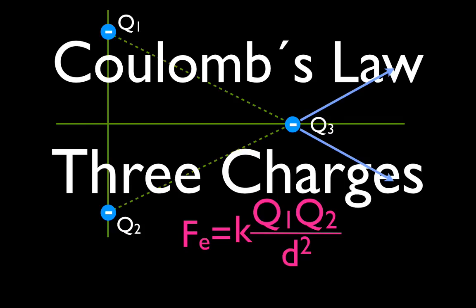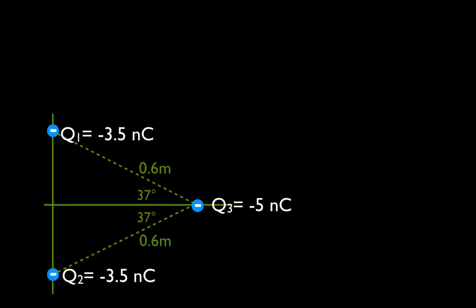In today's video, we are going to do a Coulomb's Law problem that involves three charges arranged in a triangular form. We have three charges — they are all negative. Q1 is minus 3.5 nanocoulombs, Q2 is minus 3.5 nanocoulombs, Q3 is minus 5 nanocoulombs, and they are each separated by a distance of 0.6 meters. We want to figure out the net force — the direction and magnitude — on Q3 from Q1 and Q2.